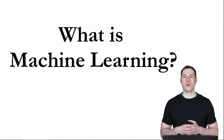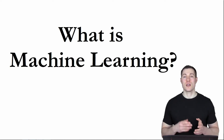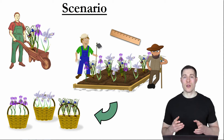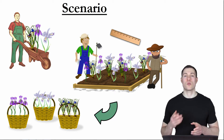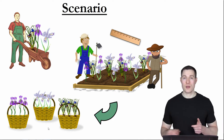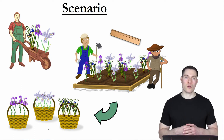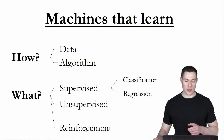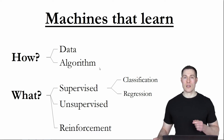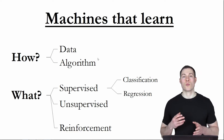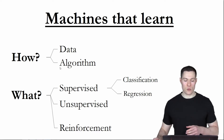Welcome to the second video of the What is Machine Learning series. In the previous video, I introduced the iris flower dataset and a made-up scenario where you imagine being a flower grower trying to devise a method for flower pickers to distinguish similar-looking flowers so they can sort them. That video showed how machine learning generally works and ended with an overview diagram depicting different types of machine learning and the elements needed to make a machine learn. In this part of the series, I'm going to talk about just one element of that diagram: the algorithm.